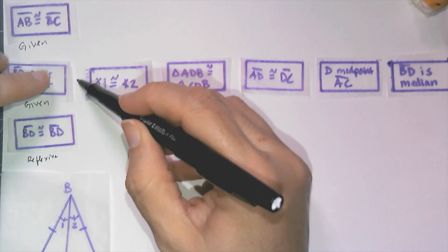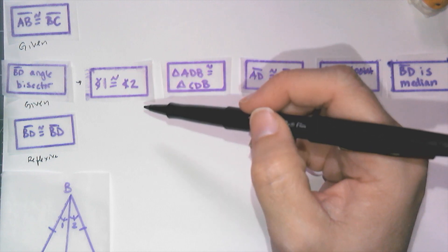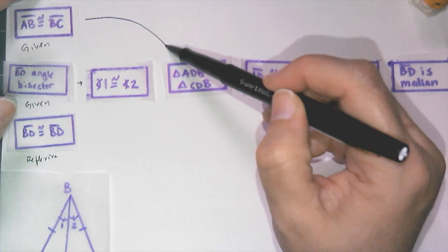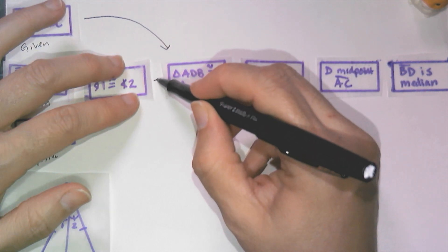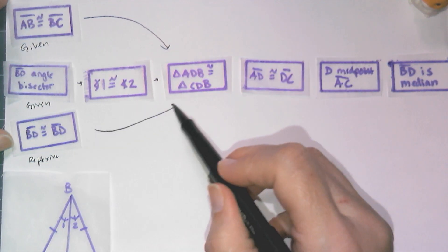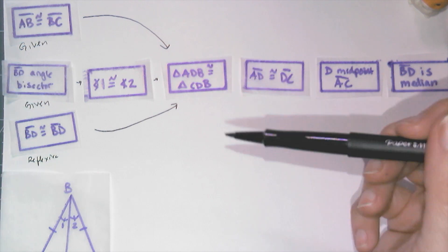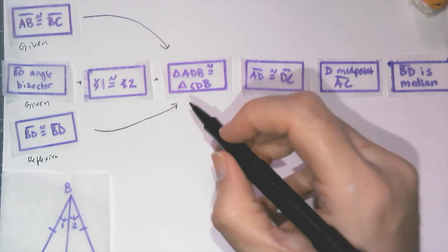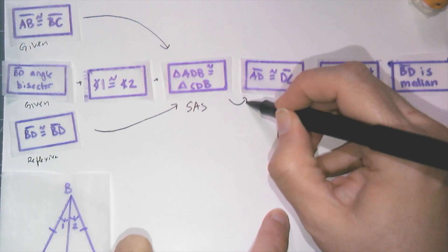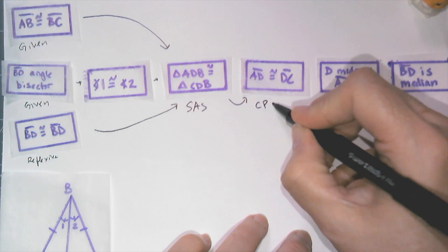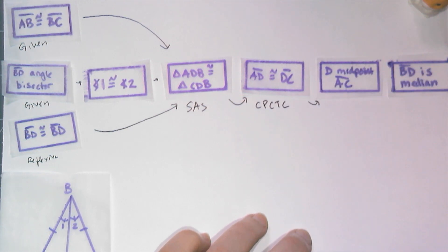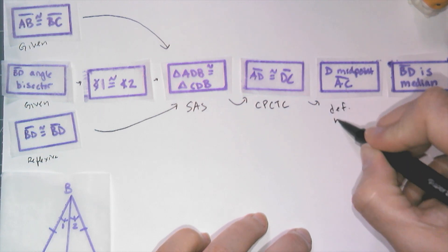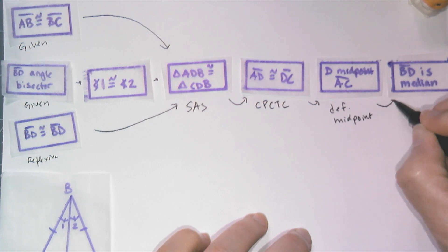So I know that this BD angle bisector is what allowed me to say that angle 1 was congruent to angle 2. And then I know that given AB is congruent to BC, and that angle 1 is congruent to angle 2, and BD being equal to itself, all flows into the argument that triangle ADB and triangle CDB are congruent by side angle side. And then of course, this flows into AD being congruent to DC by corresponding parts of congruent triangles being congruent. And this flows into that D is the midpoint by definition of the midpoint. And I know that D being the midpoint makes BD a median, flows into this final argument, this conclusion, definition of triangle median. And so this is my flowchart proof.